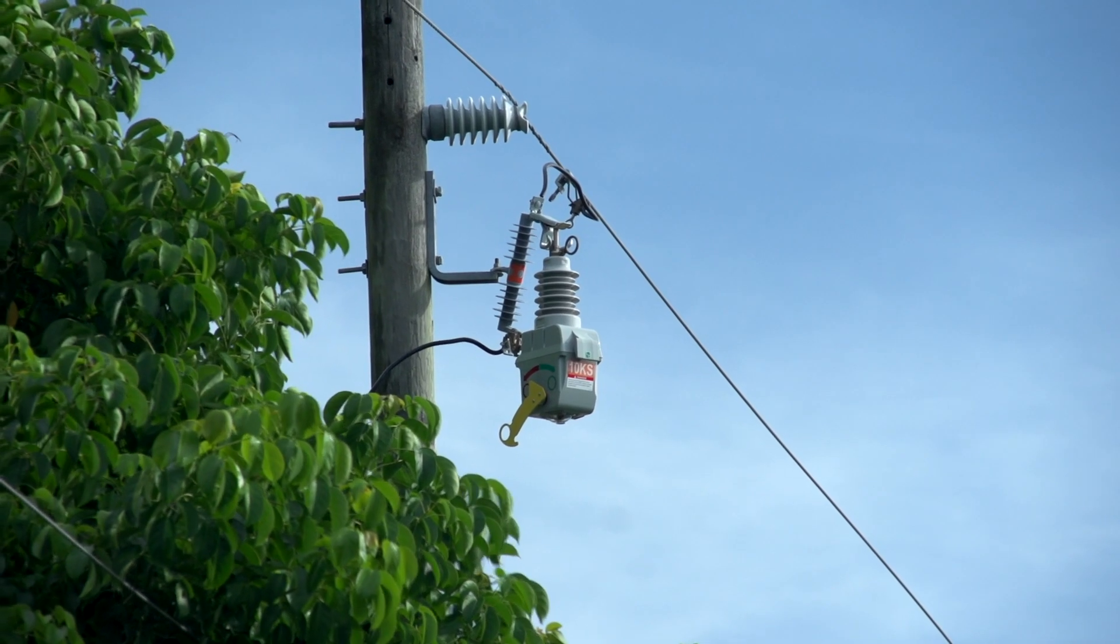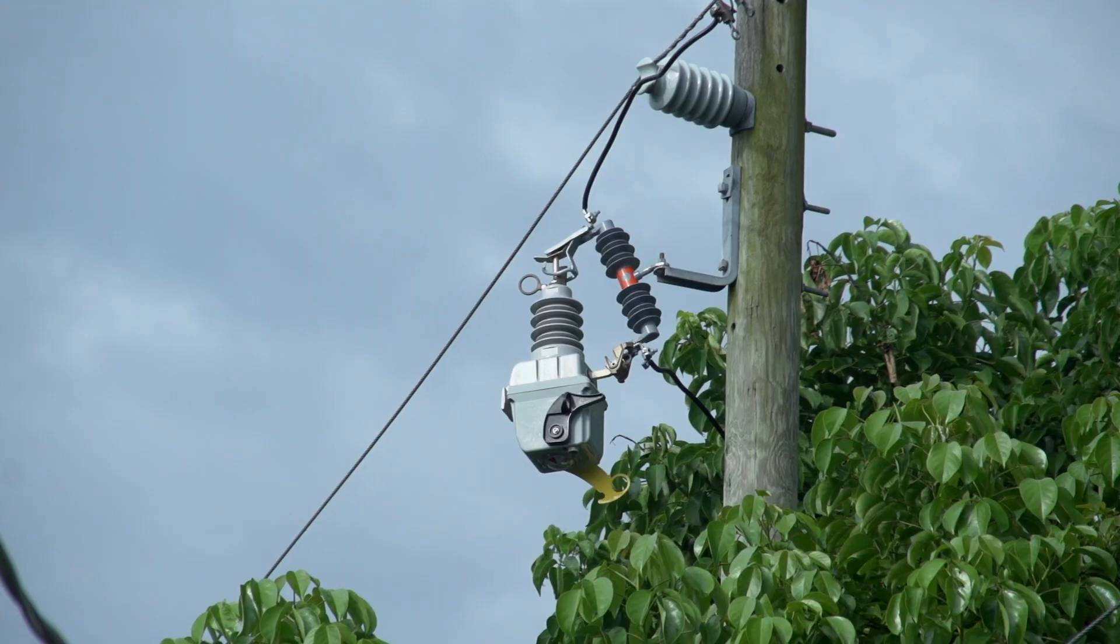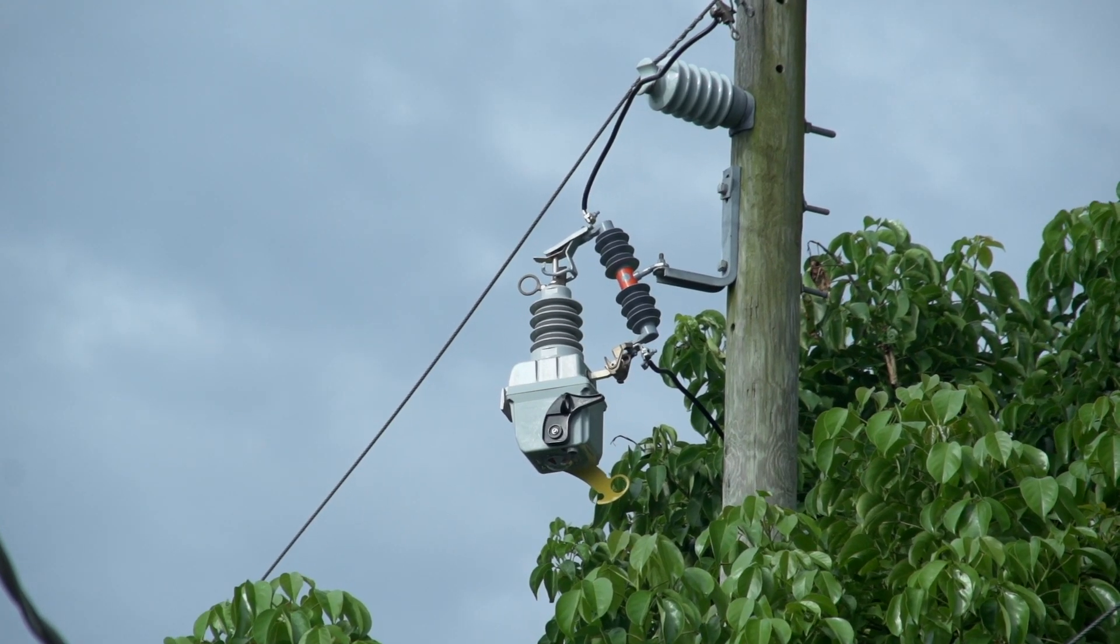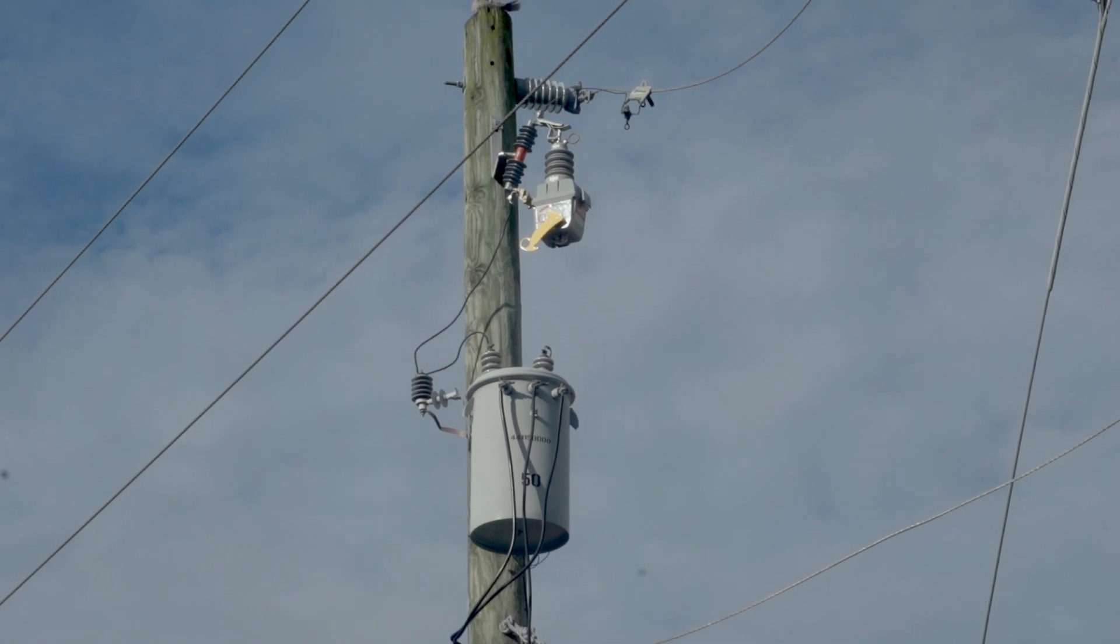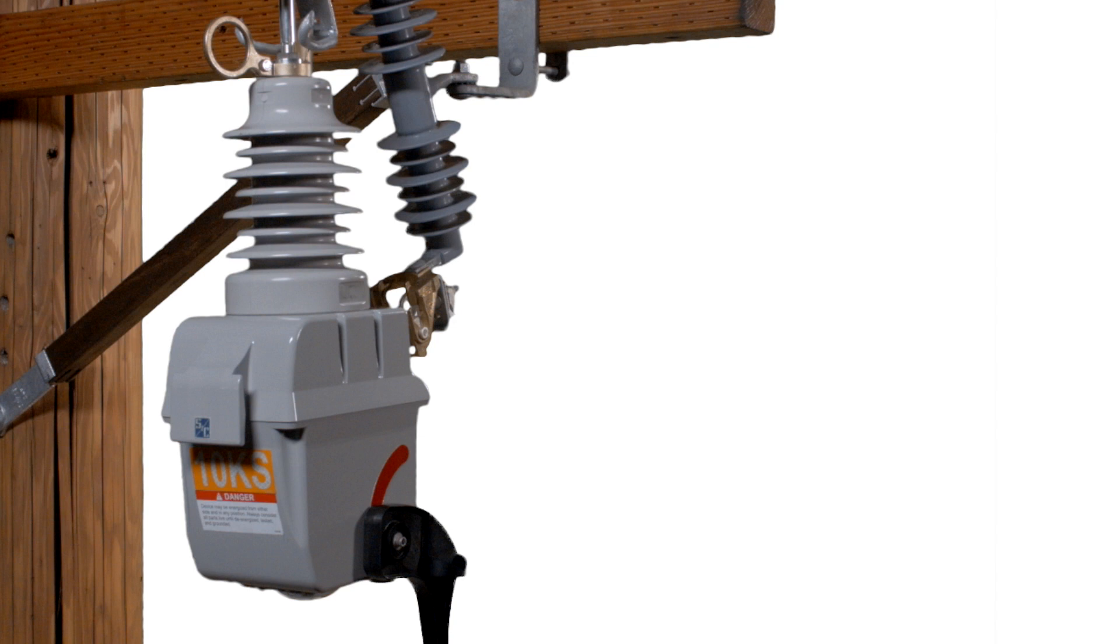The VacuFuse Self-Resetting Interrupter is a single-phase, cut-out-mounted interrupter used to eliminate unnecessary permanent outages at an overhead distribution transformer. The VacuFuse Self-Resetting Interrupter is ordered factory configured with a user-specified FuseLink TCC curve, open interval time and protection sequence reset time.